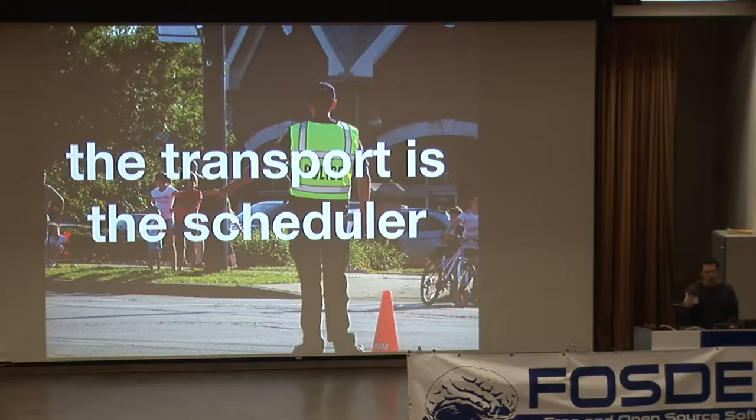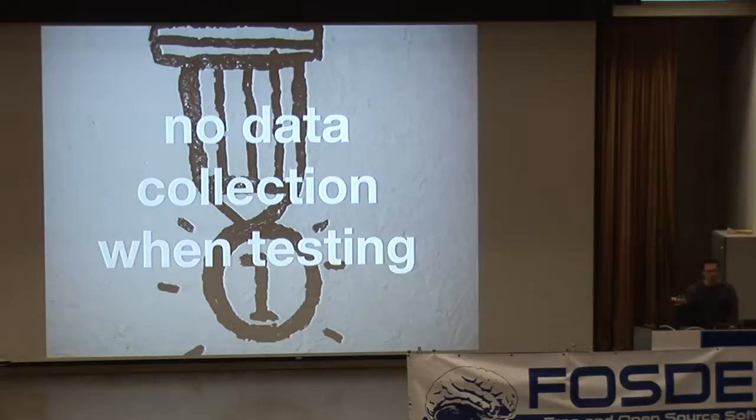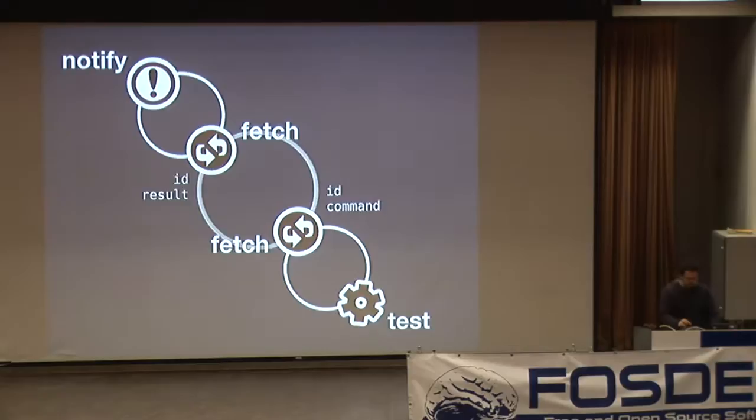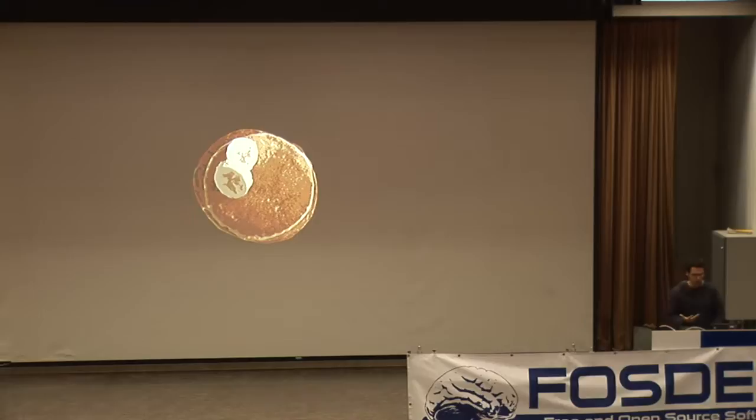We can also remove data collection from the monitoring setup entirely and use other tools like Ganglia or collectd to do that for us, focusing only on the actual notification. So we've got these distinct cycles with data going backwards and forwards — and this is where Flapjack comes in.